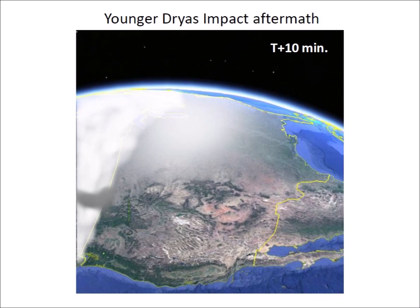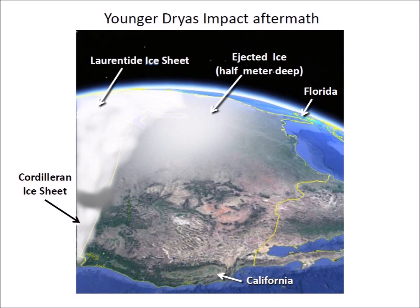In the aftermath of the Younger Dryas extraterrestrial impact, a layer of glacier ice from the secondary impacts covered the eastern United States. The saturation bombardment by the glacier ice boulders killed megafauna and Clovis people within a 1,500 kilometer radius from Saginaw Bay,